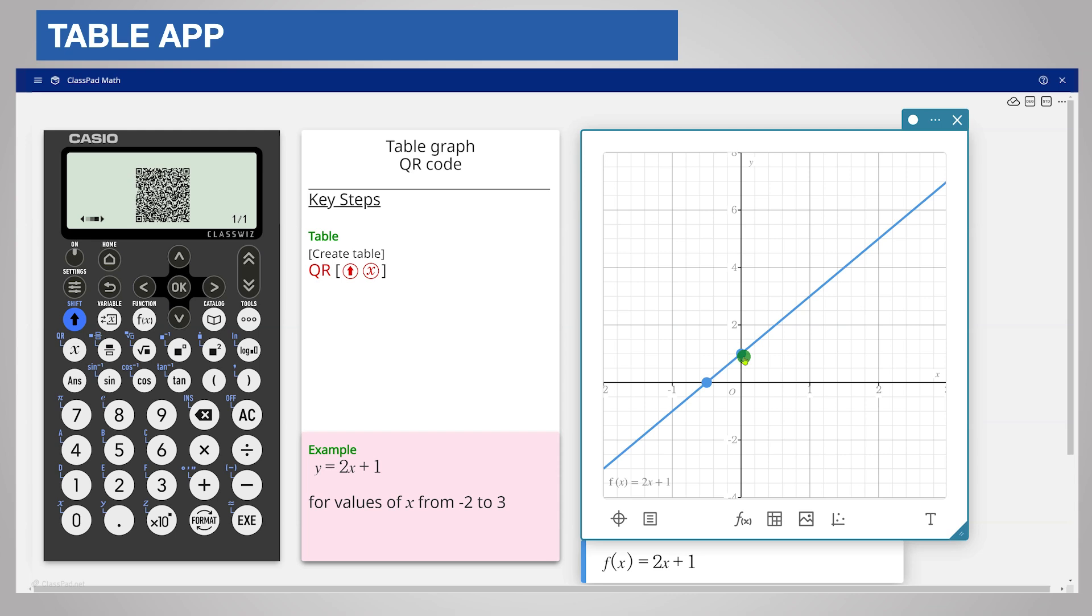Other points will be shown for more complex graphs. Click on a point to display the coordinates. You can use the functionality in classpad.net to explore the graphs further.